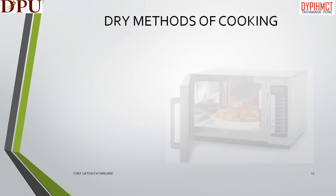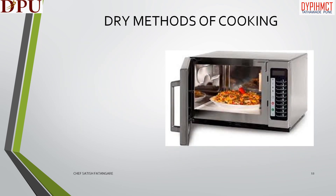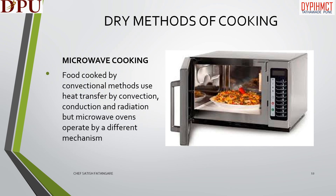In this slide we will discuss about microwave cooking. Food cooked by convection methods use heat transfer by convection, conduction, and radiation. But microwave ovens operate by a different mechanism.